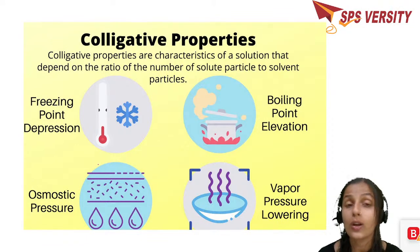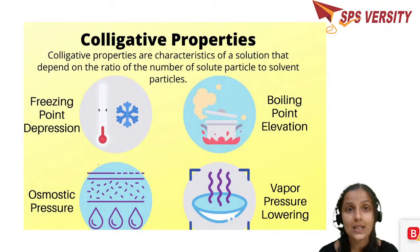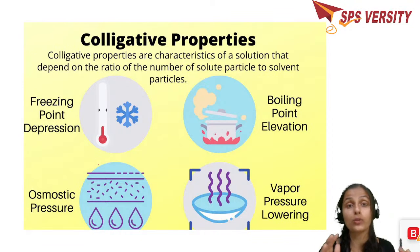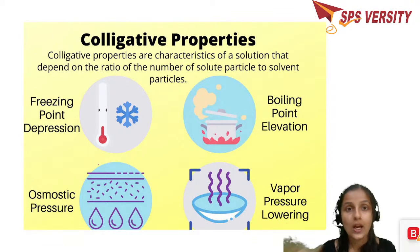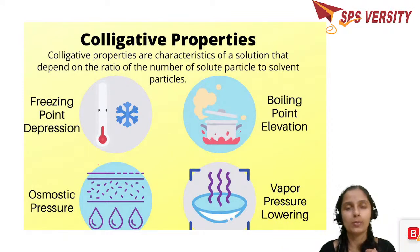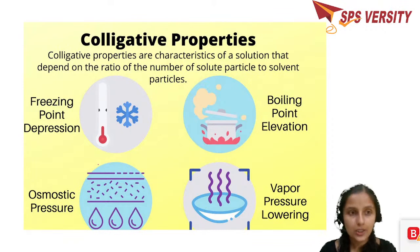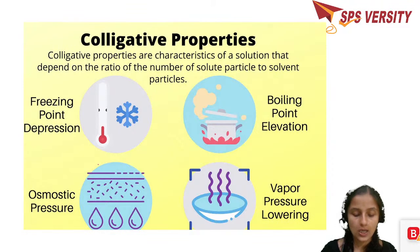Colligative properties depend on the number of solute particles in the solution. We have four major colligative properties: relative lowering of vapor pressure, elevation of boiling point, depression in freezing point, and osmotic pressure. We will see each one after the other.